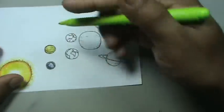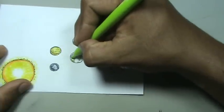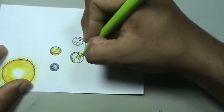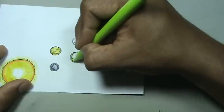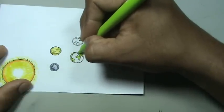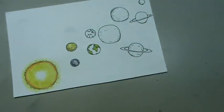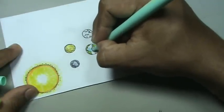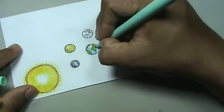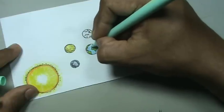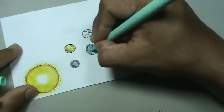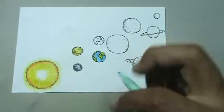Planeta Tierra lo pintamos entonces de color verde los continentes. Listo. Y aplicamos un azul para los océanos. De esta manera. Tenemos el planeta Tierra.